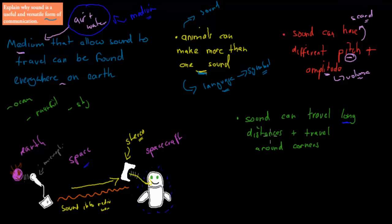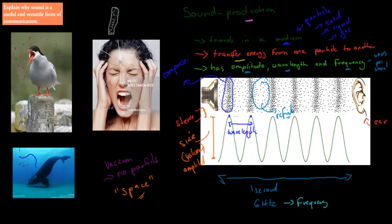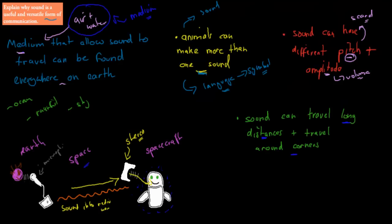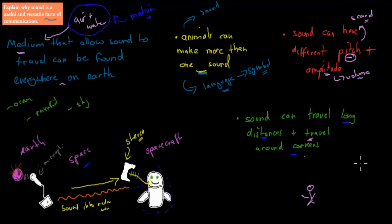Sound can also travel long distances and around corners. In the ocean, for example, a whale's sound can travel huge distances through water. Sound waves also travel long distances in air, so we can communicate with people far away. And because sound can travel around corners, we don't have to see someone to communicate with them — even if there's a fence or barrier blocking sight, the sound can still reach that person.